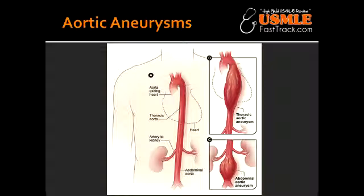What is aortic aneurysm at the level of the aortic arch commonly associated with? Aortic aneurysm at the level of the aortic arch is commonly associated with tertiary syphilis, known as syphilitic aortitis. It can also be caused by vasovasorum destruction.